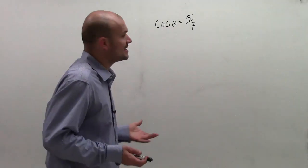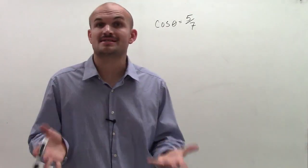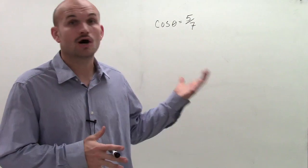All right. So what we have is cosine of theta equals 5 over 7, and what we need to do is figure out the six trigonometric functions of our angle theta.